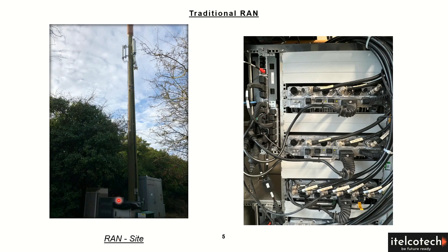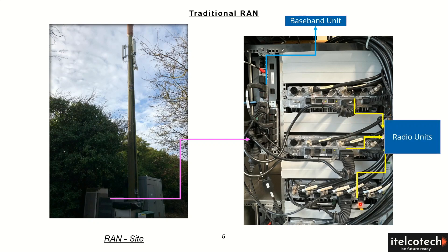Now this cabinet has certain devices inside it, as you can see on the right side. We have the baseband unit on the left side and the radio units on the other side, which are used for different technologies. Now depending upon the different frequencies, we have different radio units in this case.